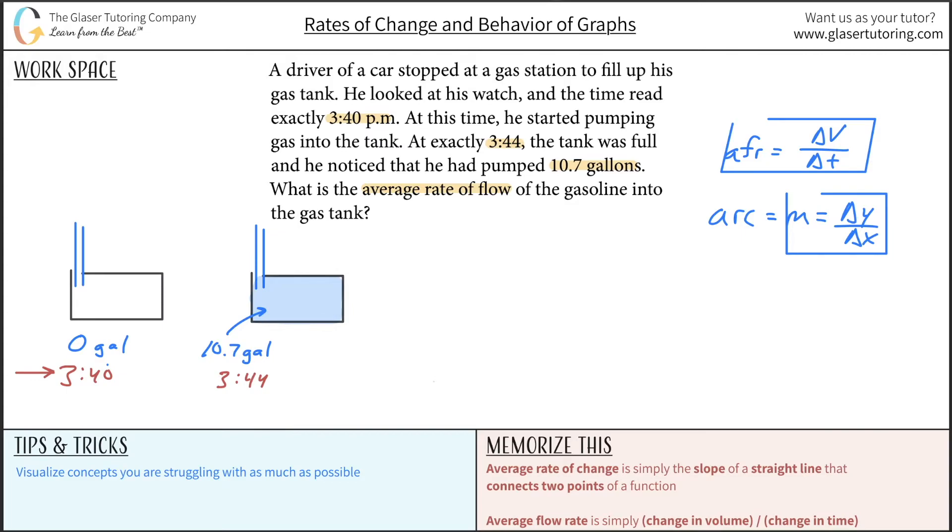So without further ado, let's do average flow rate. Average flow rate is equal to v2 minus v1 over t2 minus t1. Call this v2, call this v1, and then this would be t2 and then this would be t1. Now in terms of plugging in the numbers, average flow rate - plug in the volumes. The volume, the second volume was 10.7 gallons, the initial was zero, and now divided by, here's the thing.